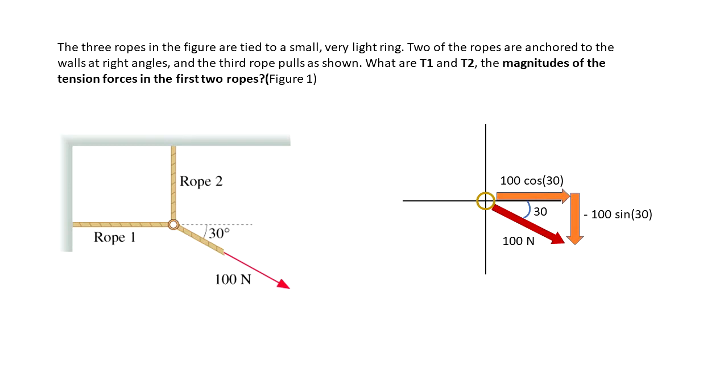Then you see that the 100 sine of 30 is negative. The Y component is negative because it's pointing downwards, and it's a vector. The blue arrows represent the tension forces done by rope one and rope two.